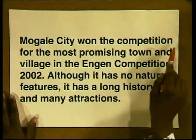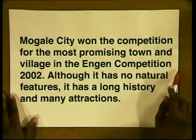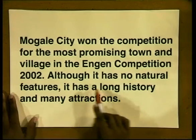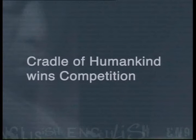There are many correct ways of doing this. This is how I would do it: Mokhale City won the competition for the most promising town and village in the Engine competition 2002. Although it has no natural features, it has a long history and many attractions. That sums up the essence of the article. Now we need to condense it further and formulate a title. A good title should contain no more than five words and should not contain any figurative language. This would be a suitable title: Cradle of Humankind Wins Competition. Once you have the title, you then need to write the summary by listing the essential points from the article.